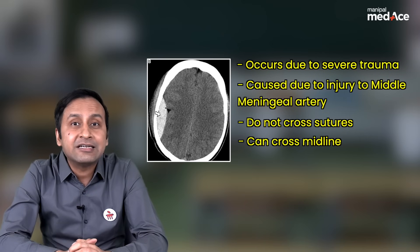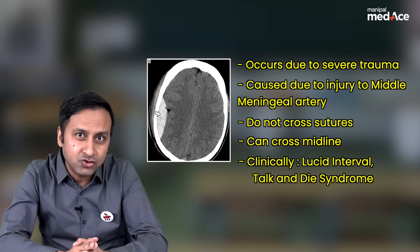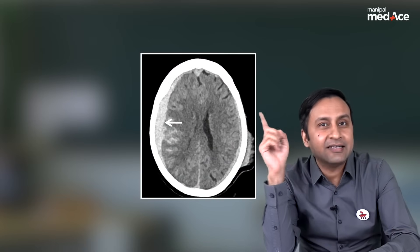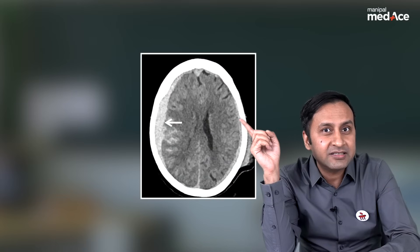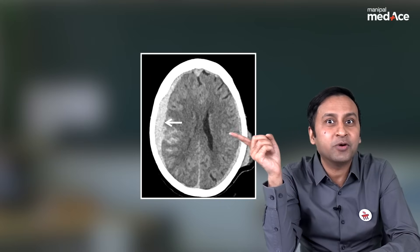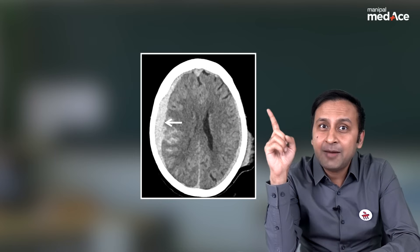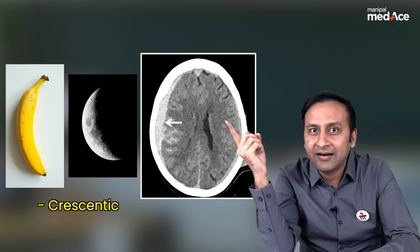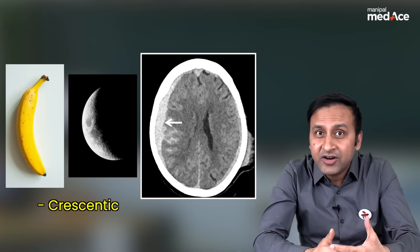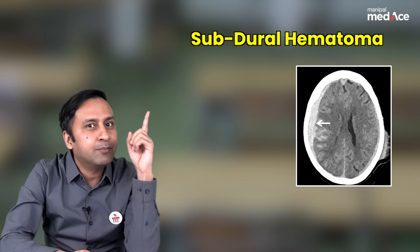Some of the important classical clinical features associated with EDH are the Tonkin-Dye syndrome and the lucid interval. Now, let's have a look at our second example. In this CT, you can see an extraaxial hyperdensity over the right parietal convexity, but there is a change in the shape — the shape is that of a crescent or a banana. If you find this crescentic or banana-shaped hyperdensity which is extraaxial in location over the cerebral convexity, this is an example of a subdural hemorrhage.